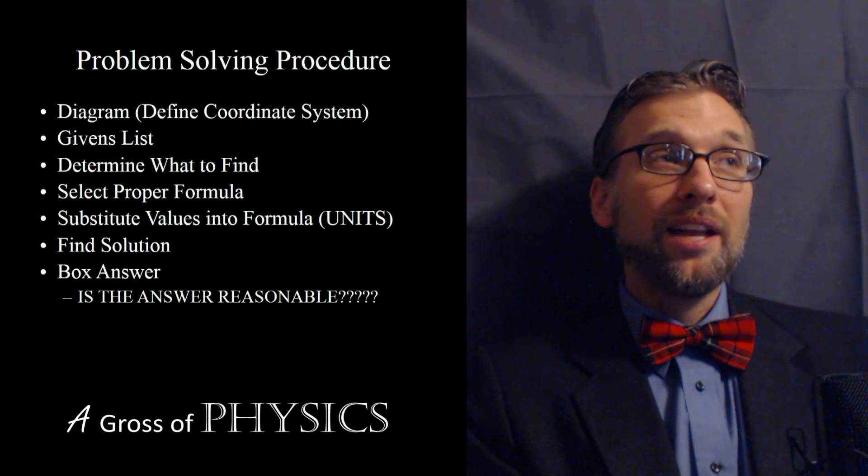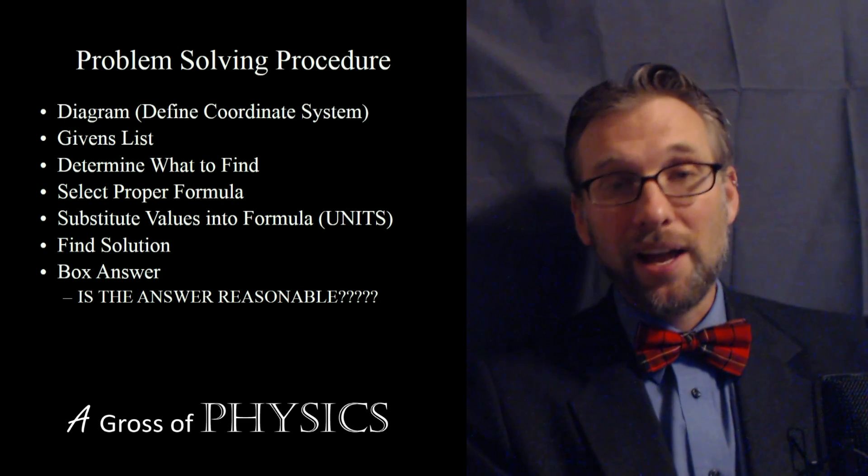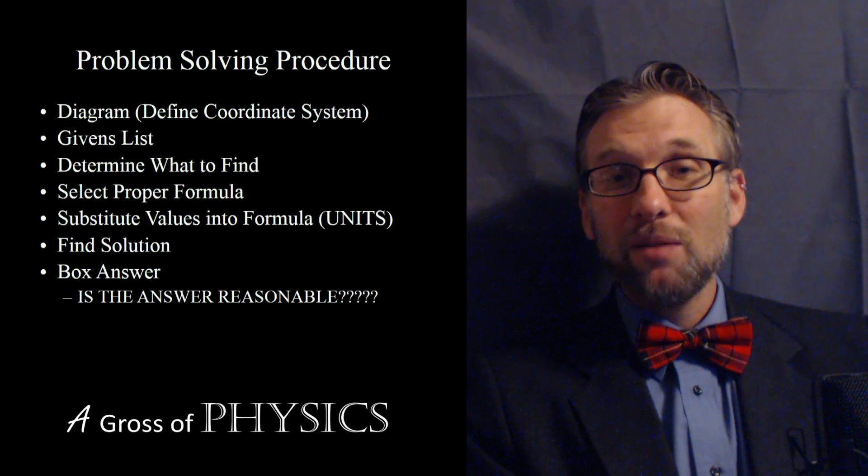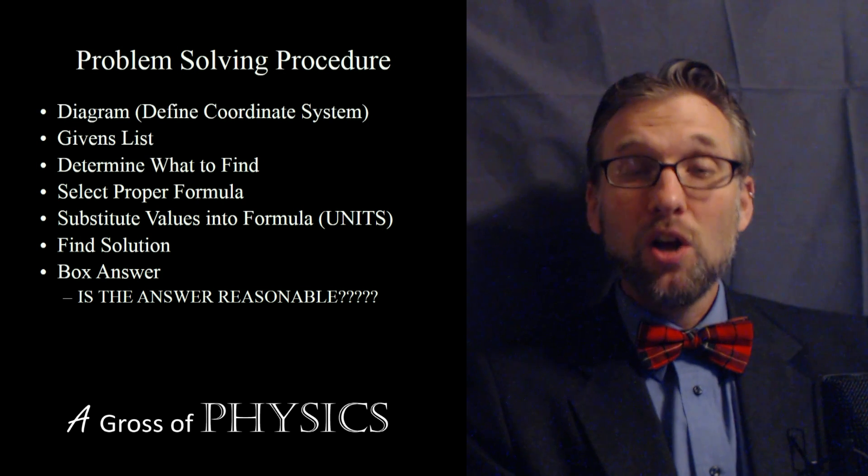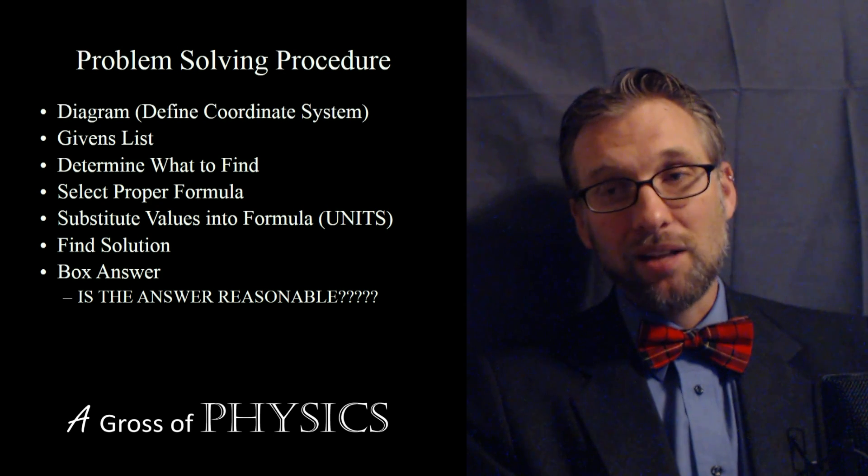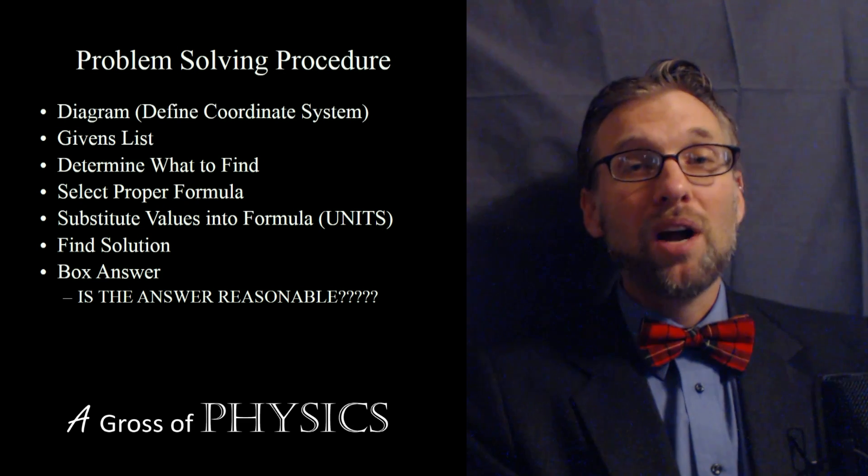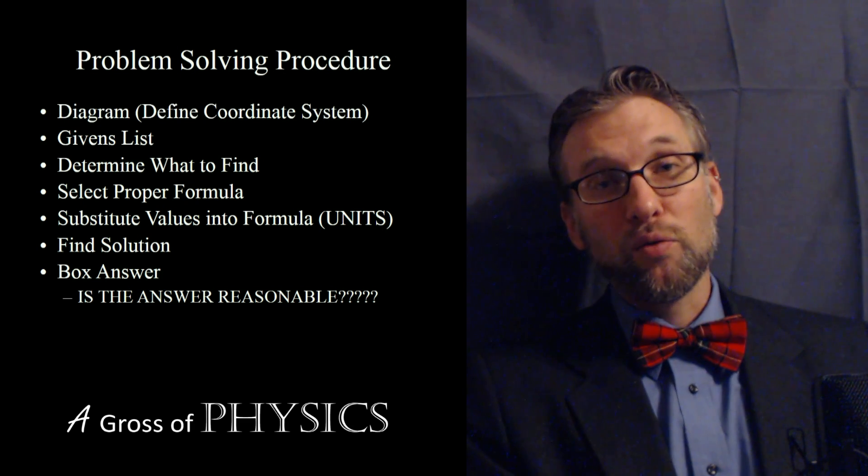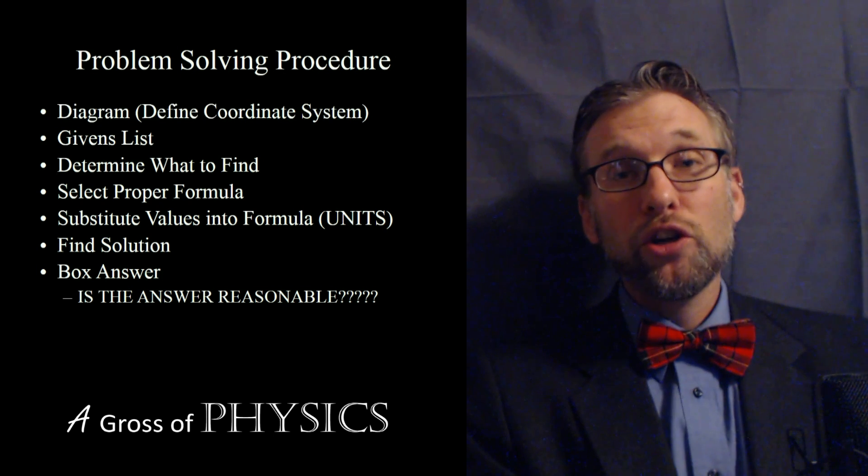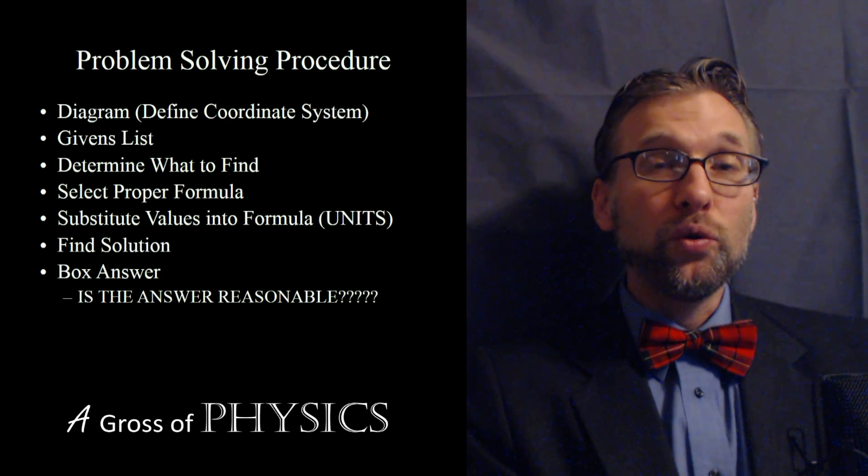It's important to realize that you should at the end check to see if your answer is reasonable. If you're solving for the mass of the earth and you get a number of 7 grams, you probably did something wrong. When we're talking about speeds, if it's bigger than 3 times 10 to the 8, which is the speed of light, you definitely did something wrong. Most problems should have a general realm of reasonableness. Now I'd like to show you a few sample problems to show that methodology.